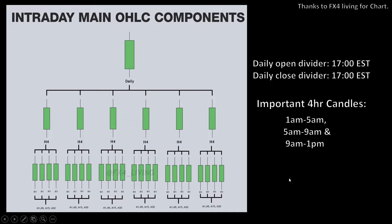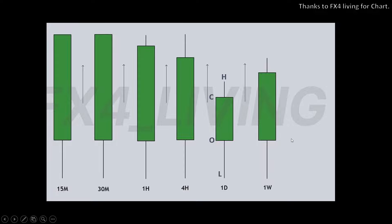The body of the candle generally tells the story — which ones do the real damage. When the weekly candle expands up, the majority of daily candles inside that weekly candle will also be expanding up, meaning they have bullish closure above their open. In the same way, when the daily candle expands up, the four-hour candles inside will also expand up. And when the four-hour candle expands up, the 15-minute and one-hour candles inside will also be expanding up.